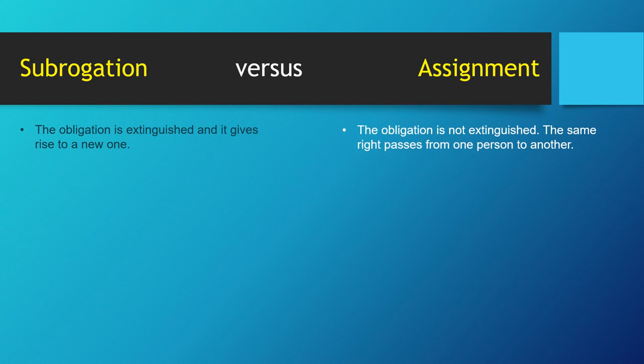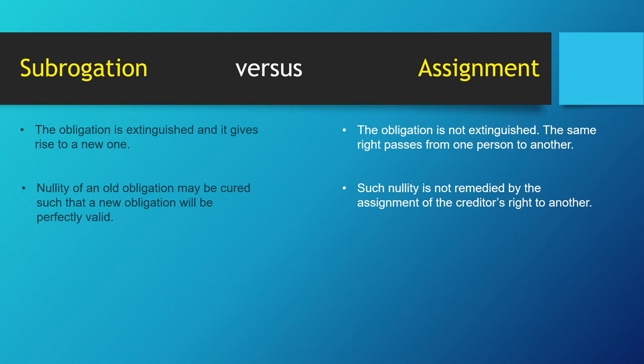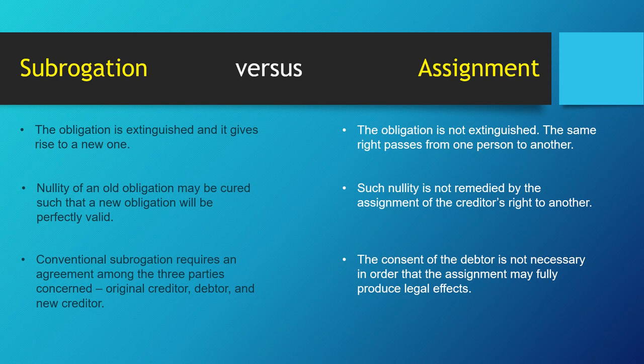In subrogation, the nullity of an old obligation may be cured, such that a new obligation will be perfectly valid. On the other hand, such nullity is not remedied by the assignment of the creditor's right to another. Lastly, conventional subrogation requires an agreement among the three parties concerned — the original creditor, the debtor, and the new creditor — while the consent of the debtor is not necessary in order that the assignment may be fully effected.